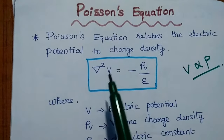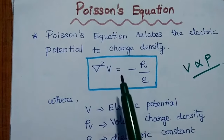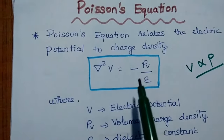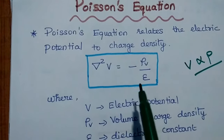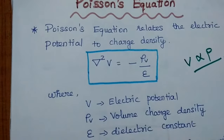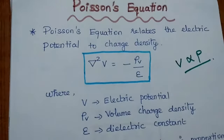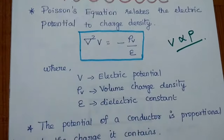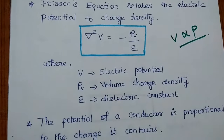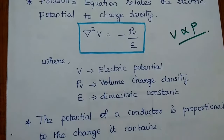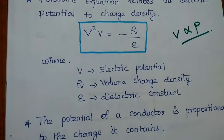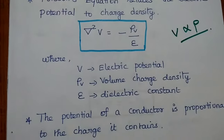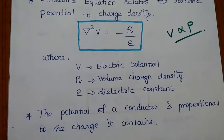The Poisson equation is: del squared V is equal to minus rho V divided by epsilon. Here, V is the electric potential, rho V is the volume charge density, and epsilon is the dielectric constant.